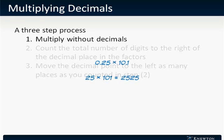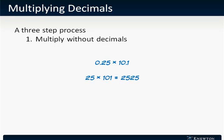Let's take a look at an example. So, imagine that we have 0.25 times 10.1. We'll multiply these numbers as if they had no decimals, 25 times 101. This is 2,525.